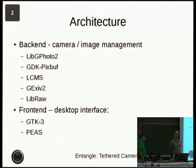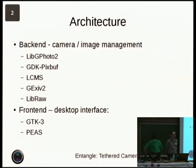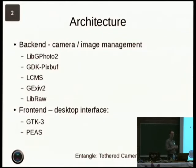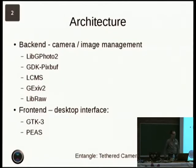The second part of the codebase is what I call the front end. At the moment this is a GTK3 desktop application. The reason for doing the split between the back end and the front end is that eventually there will be multiple front ends. The one I've got in mind as the second alternative would be a GIMP plug-in, so you could take shots directly from GIMP and have them download straight into your image editing program.